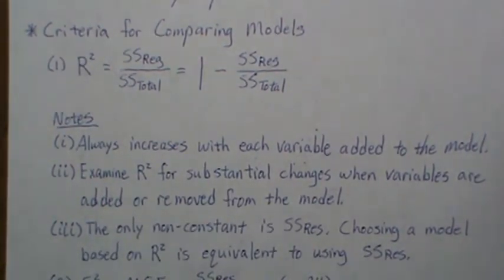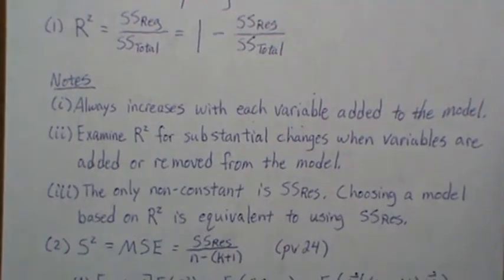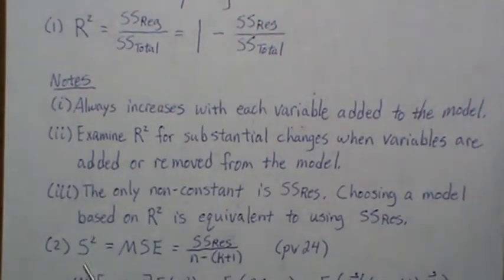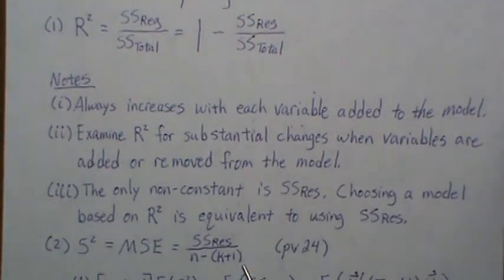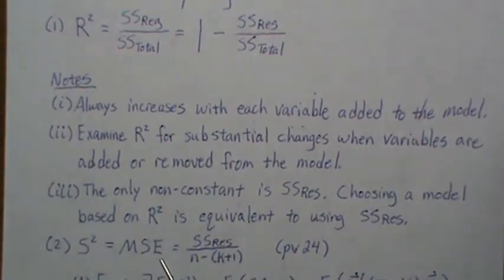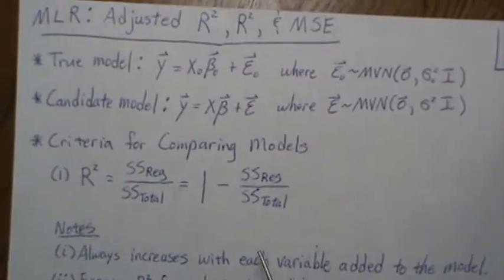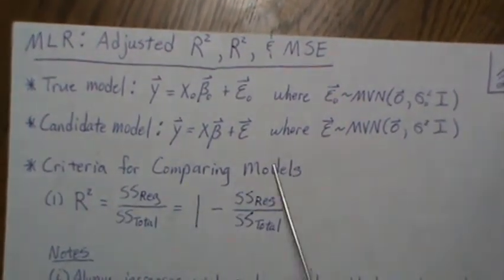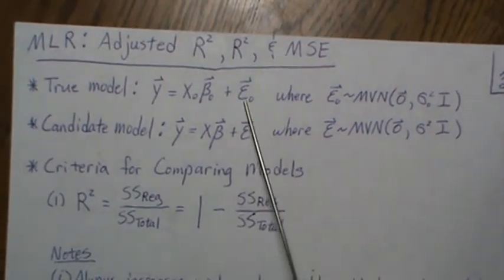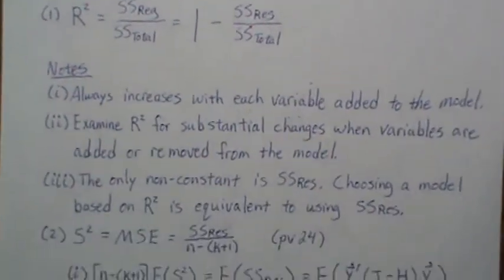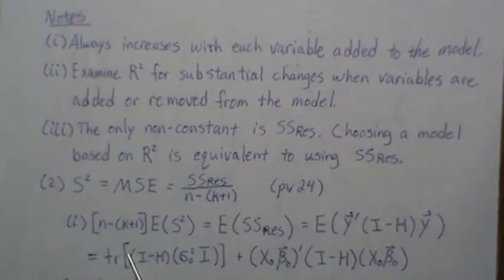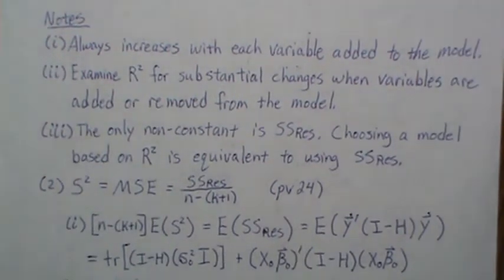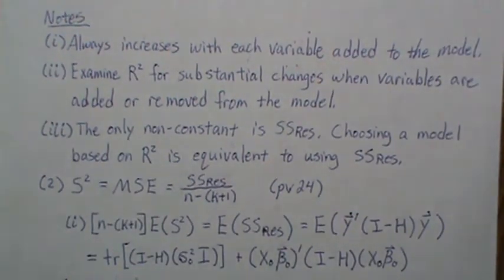The next statistic we use is the mean square error, sometimes generically called S squared. It's the sum of squares residual over N minus K plus 1, which is the unbiased estimate for the mean square error. What this estimates is sigma squared — the variability in the residual or the error.